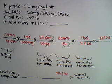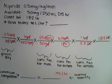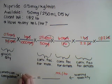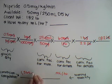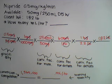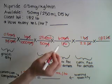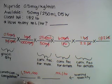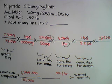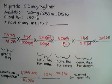We can now go ahead and solve our equation, as there's nothing left for conversion factors and nothing left to cancel out. If we multiply our numerators — 0.5 times 1 times 250 times 60 times 1 times 182 — we get our numerator value. And if we multiply our denominators — 1,000 by 50 by 2.2 — we end up with 110,000. When divided, these large numbers equal 12.4. This is our wanted quantity: 12.4 milliliters per hour.